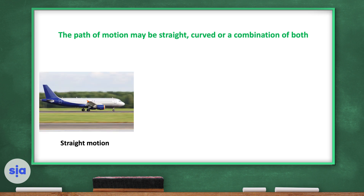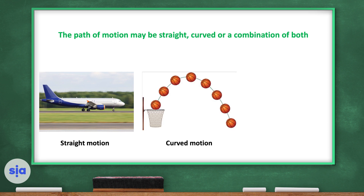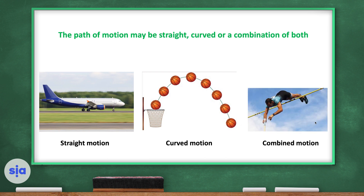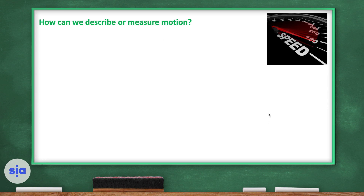This is straight motion — when the object moves in one direction in a straight line. And this is curved motion — look at this basketball, it's having a curved path. While this player is having a combined motion: straight at first, and then he bends his body to do a curved motion.